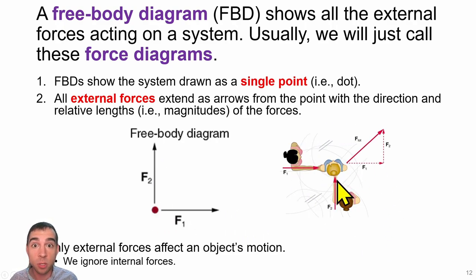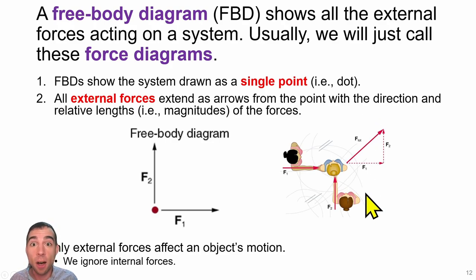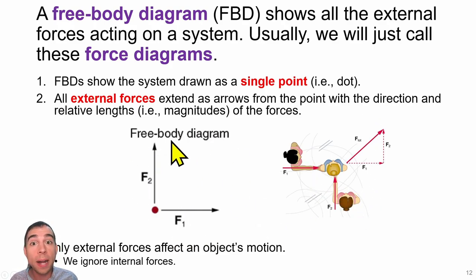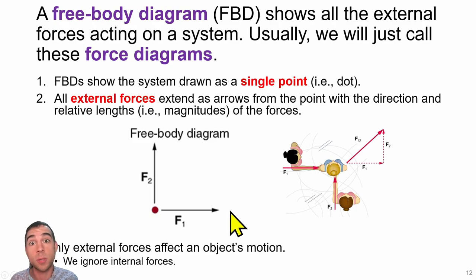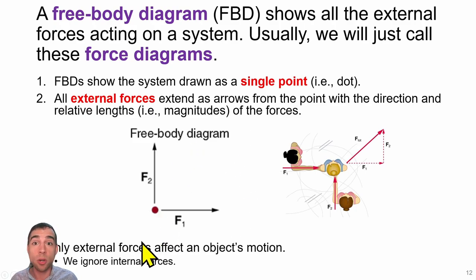When we think about the skater being pushed to the right and up by agents one and two, we can draw a free body diagram with the skater as a single point and the two applied forces in their respective directions. For these diagrams we ignore any internal forces.